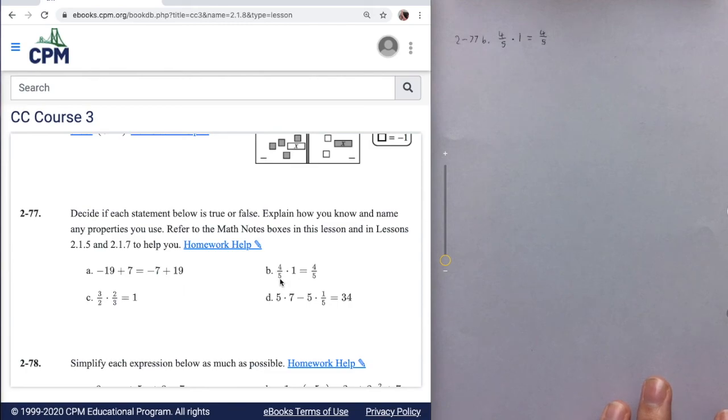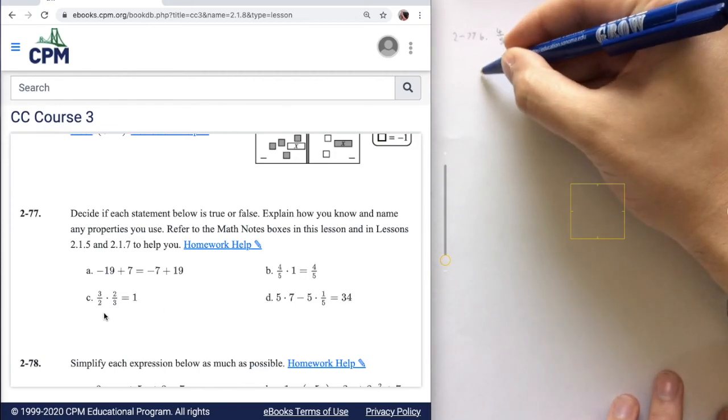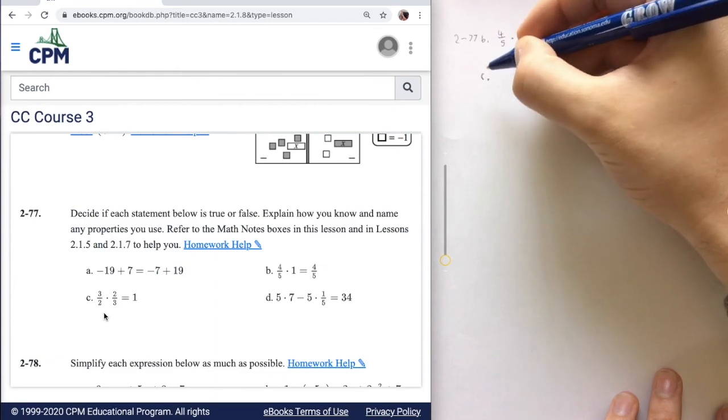So over here we have 4 fifths, we're just multiplying it by 1, and we're ending up with just 4 fifths, and so that is true. That one is very short, so let's go on to part c as well.